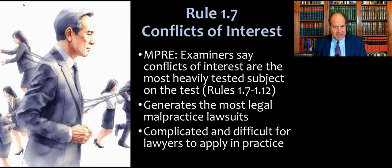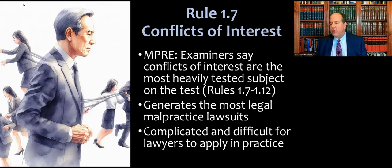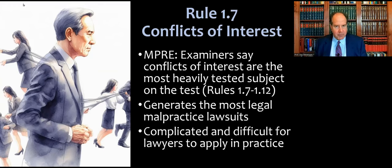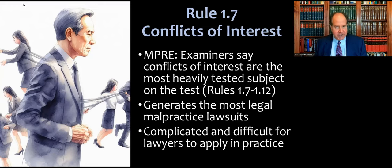Model Rule 1.7 is about concurrent conflicts of interest — people that you are representing at the same time or in the present. We'll have other conflicts rules about former clients later on in the course, but this is where we start. According to the MPRE examiners, conflicts of interest overall is the most heavily tested subject on that test.